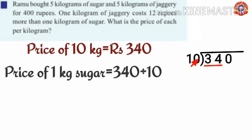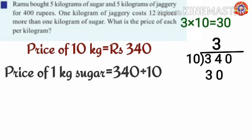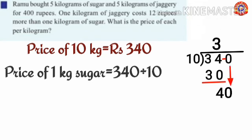How many times does 10 go into 34? There is no 34 in the multiplication table of 10, so we take 30. 3 times 10 is 30. 34 minus 30 equals 4. Bring down 0 to get 40. How many times does 10 go into 40? 4 times. 4 into 10 is 40. 40 minus 40 equals 0. So the price of 1 kilogram of sugar equals 34 rupees.